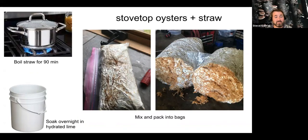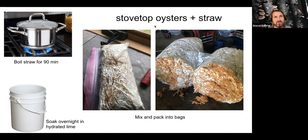Another example you could do in a very small space is what I call stovetop oyster cultivation, focused on the goal of producing fruiting mushrooms. You could obtain shredded straw, or another common thing people find especially in pet stores are wood shavings used for bedding, like aspen shavings. You want to use hardwood shavings — from trees with leaves, not needles — because pine tends to inhibit mycelium growth.